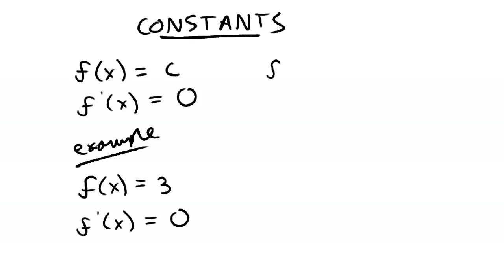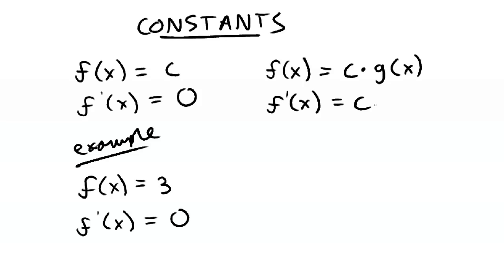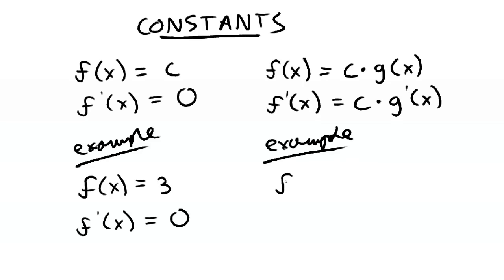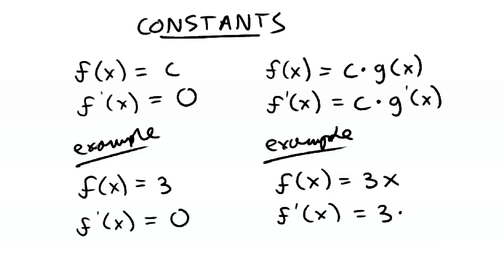In another instance, if f of x is equal to some constant multiplied by some function g of x, then the derivative of the function of x is equal to c multiplied by g prime of x. For example, if f of x is equal to 3 multiplied by x, then f prime of x is equal to 3 multiplied by the derivative of x, or 1.